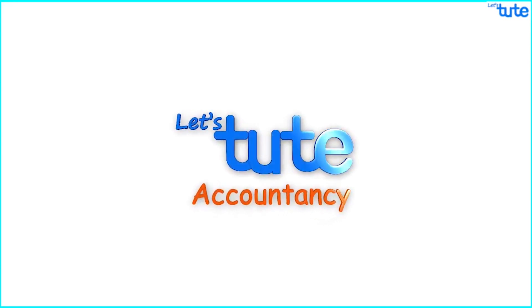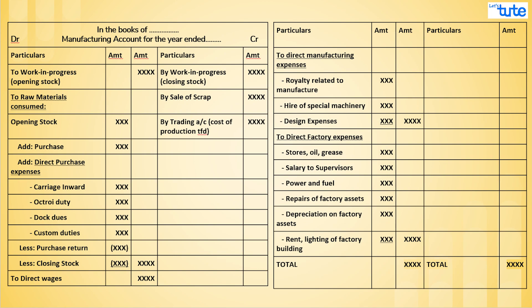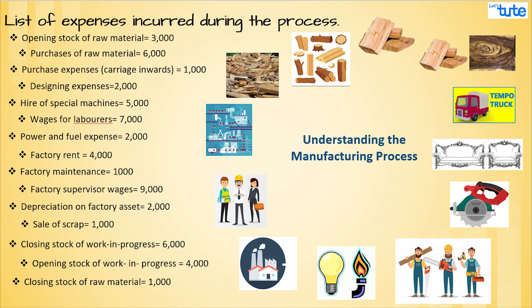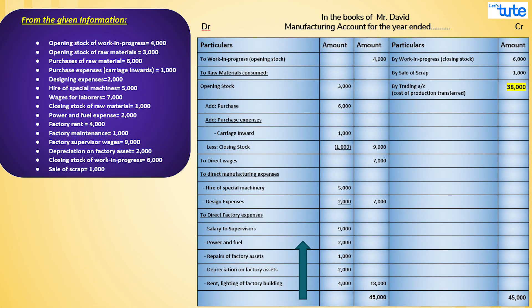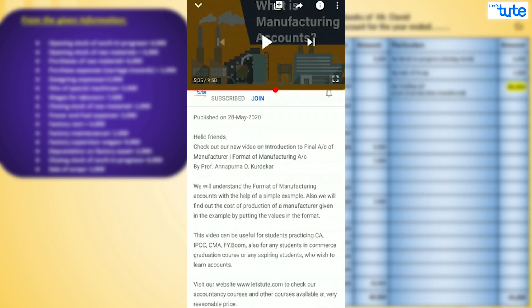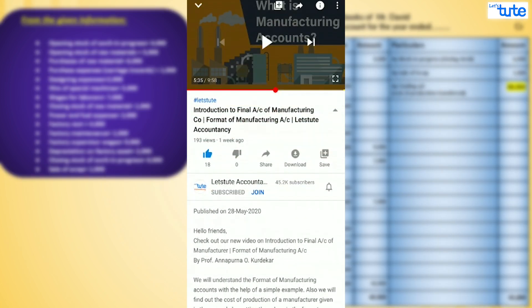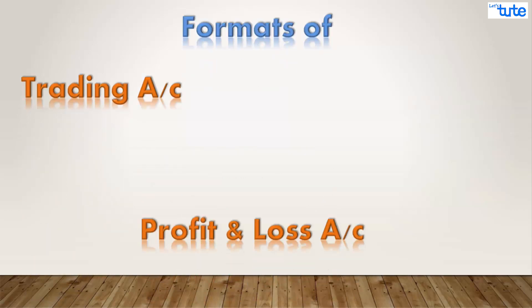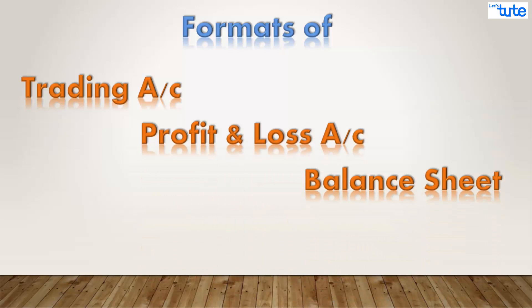Welcome back to Let's Do Accountancy. In our previous session, we studied the format of the manufacturing account and its entire process with the help of an example. We found out the cost of production for manufacturing of sofa sets in the books of Mr. David. In today's session, we will analyze and understand the formats of trading account, profit and loss account, and balance sheet.